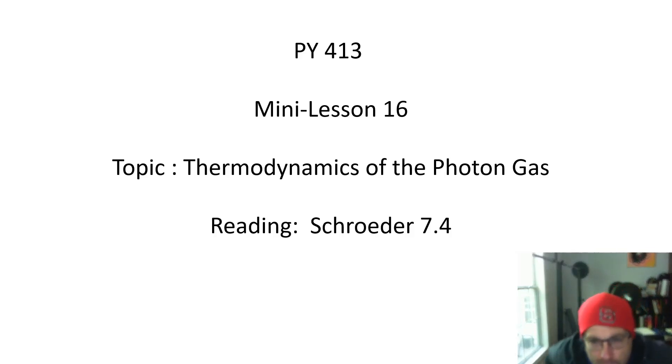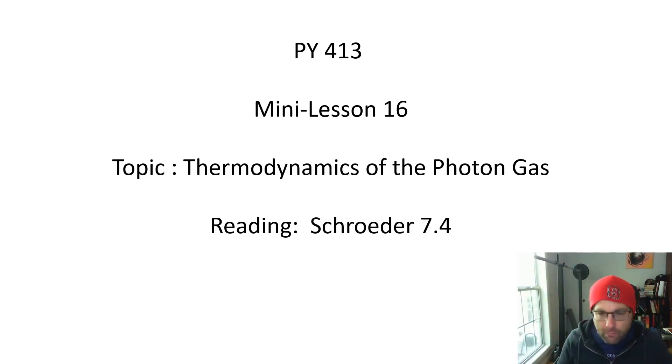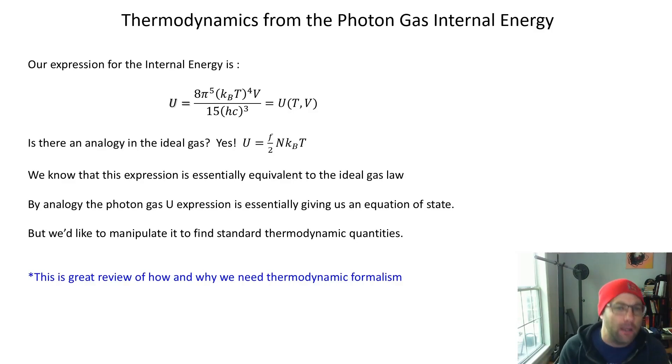We're still in section 7.4 of Schroeder. The result we got last time by applying quantization of photon energy and Bose-Einstein occupation is that the internal energy of the photon gas goes as the fourth power of temperature, proportional to volume. It's an extensive quantity, so this is an expression for internal energy as a function of temperature and volume.